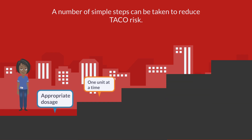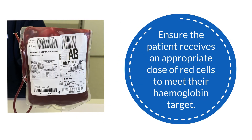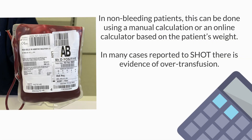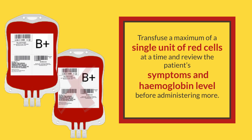A number of simple steps can be taken to reduce the risk of TACO. Ensure the patient receives an appropriate dose of red cells to meet their haemoglobin target. In non-bleeding patients this can be done using a manual calculation or an online calculator based on the patient's weight. In many cases reported to SHOT there is evidence of over-transfusion. Transfuse a maximum of a single unit of red cells at a time and review the patient's symptoms and haemoglobin level before administering more.